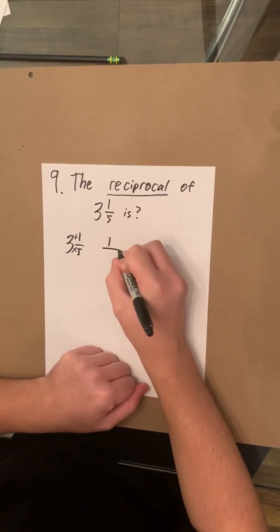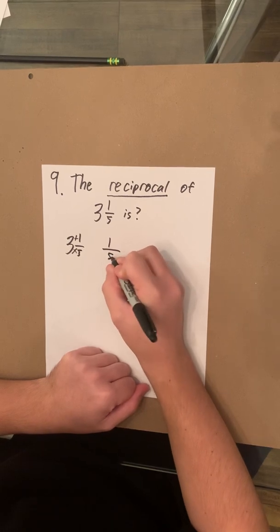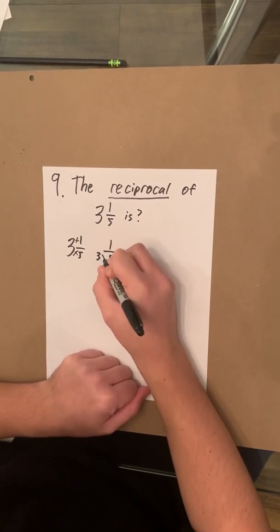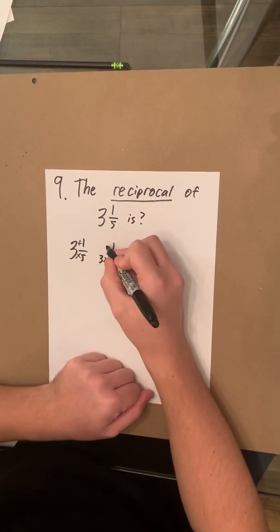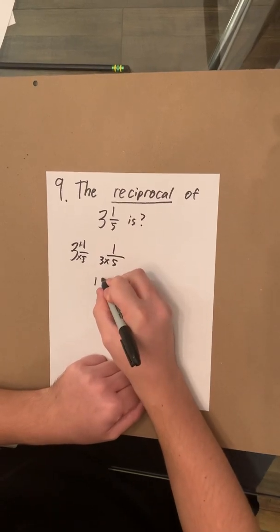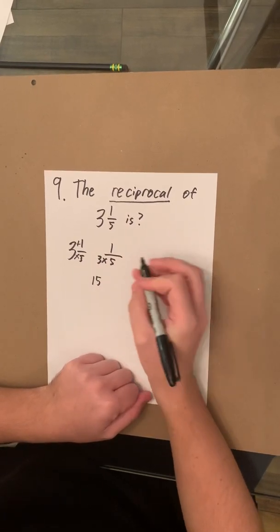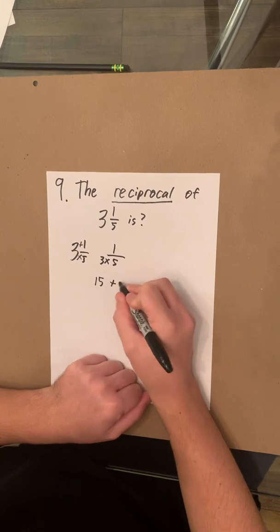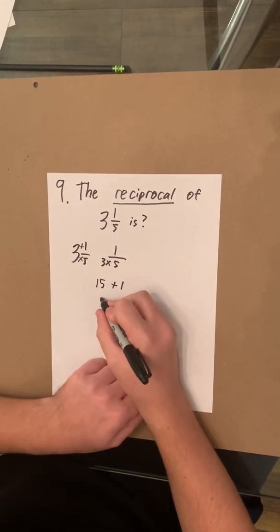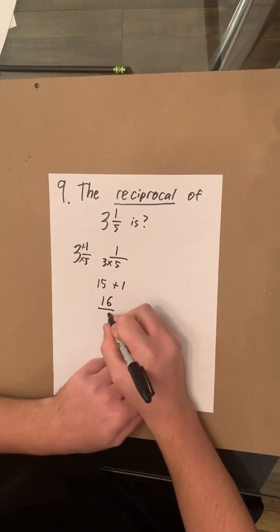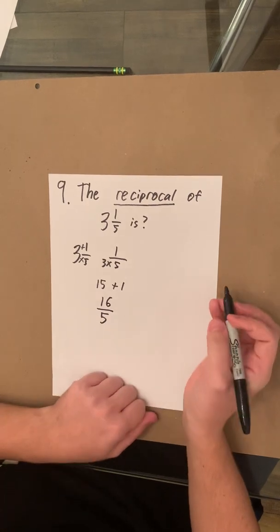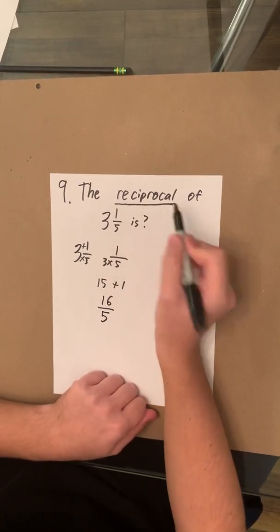So first we will have 1 over 5 times 3 and then from that we will get 15. We're going to add that 15 to the 1 finishing with 16 over 5. But remember it's asking for the reciprocal.